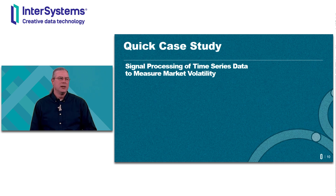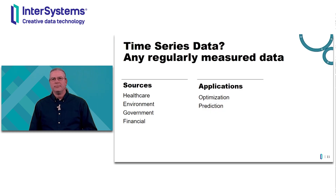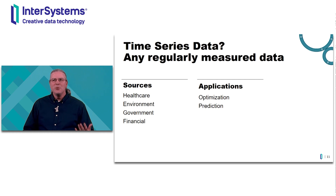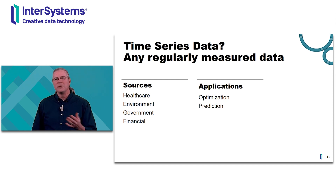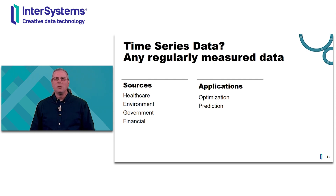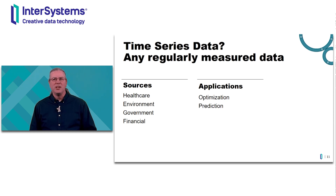So let's go through a quick case study — signal processing of time series data to measure market volatility. Time series is any data captured with a timestamp. An ECG is a time series. Precipitation data from the weather is a time series. Employment data from the government is a time series. And of course, stock tickers are time series. It's used in a wide variety of applications, with a ton of research going into optimization and prediction tools — everything from efficiently delivering your Amazon order to predicting which patients in the ER are most likely to have a heart attack.